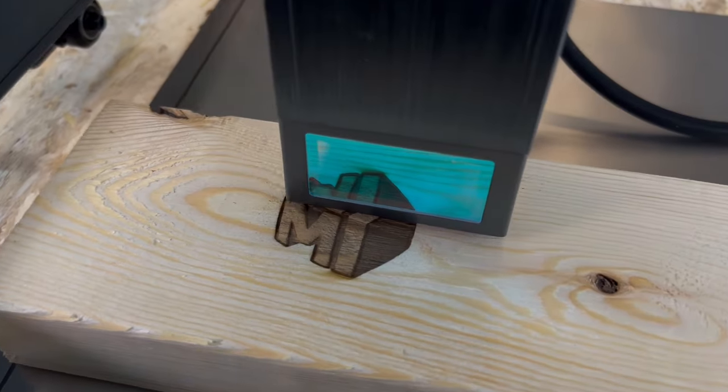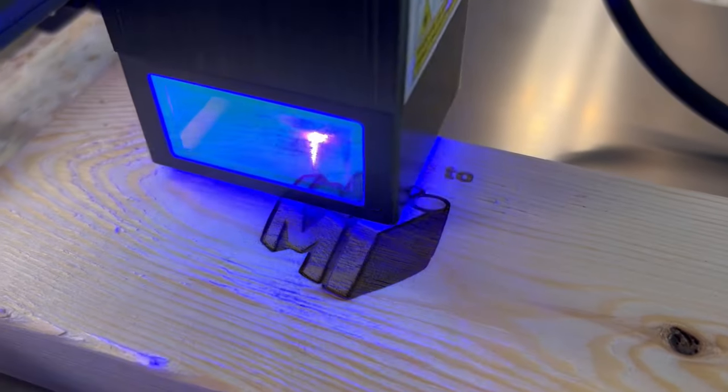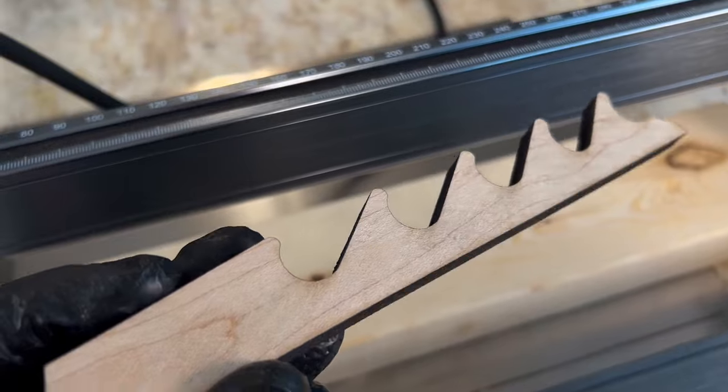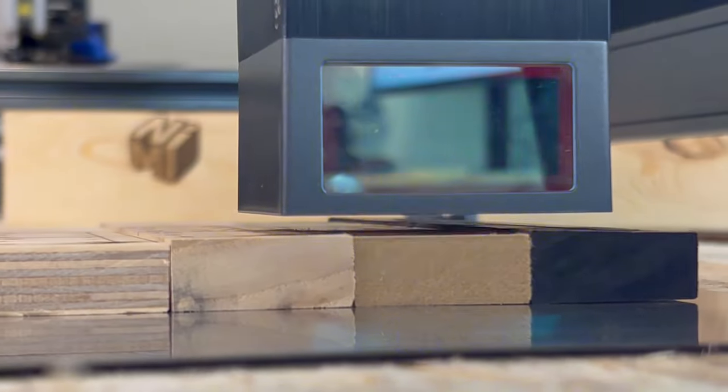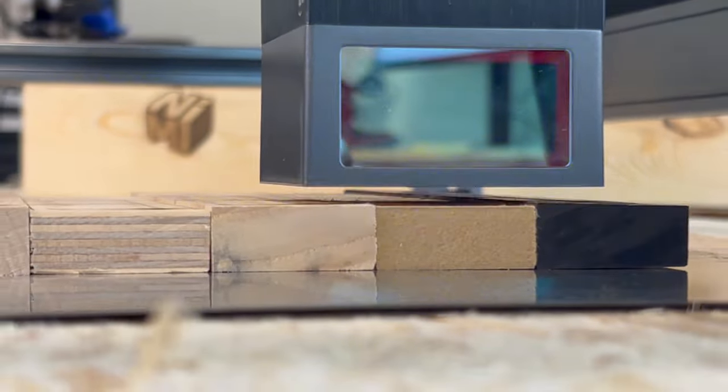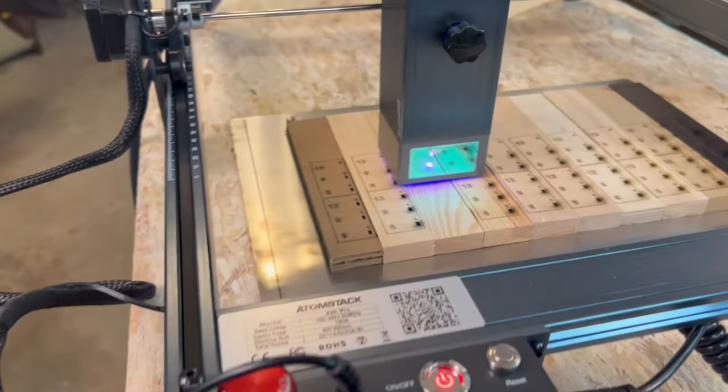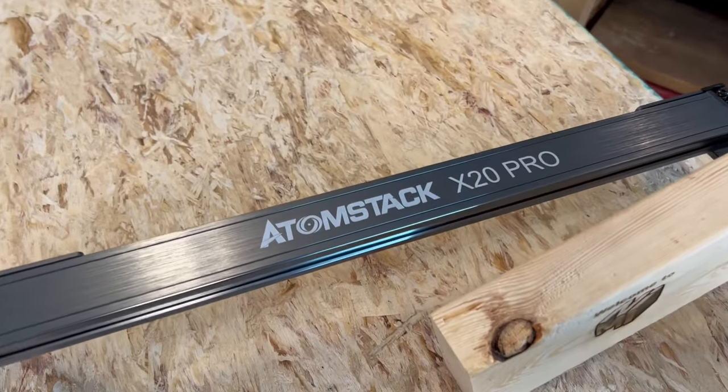We're in a pretty amazing time where someone with a home shop can own a laser engraver like this one which has the power to cut through solid wood. This particular laser is touted as one of the most powerful in its class. It is made by Atomstack and it's the X20 Pro model.